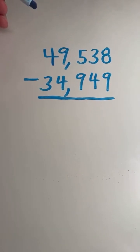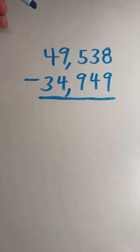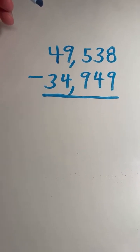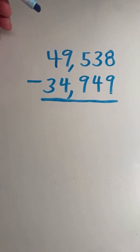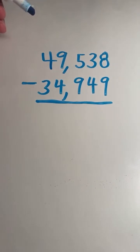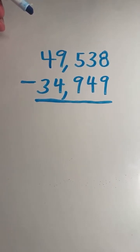We have 49,538 minus 34,949. Again, first step before we do any subtraction is we see if grouping is needed, and we regroup whenever there's a bottom digit that's bigger than the top digit.